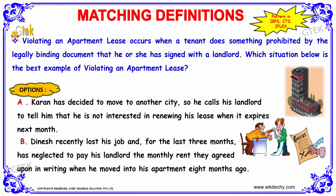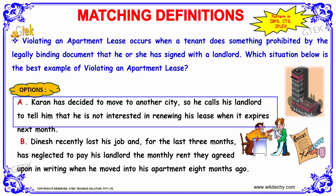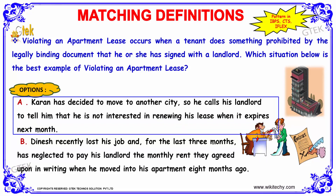This is a question. Violating an apartment lease occurs when a tenant does something prohibited by the legally binding document that he or she has signed with the landlord. Which situation below is the best example of violating an apartment lease? Option A: Karan has decided to move to another city, so he calls his landlord to tell him that he is not interested in renewing his lease when it expires next month.